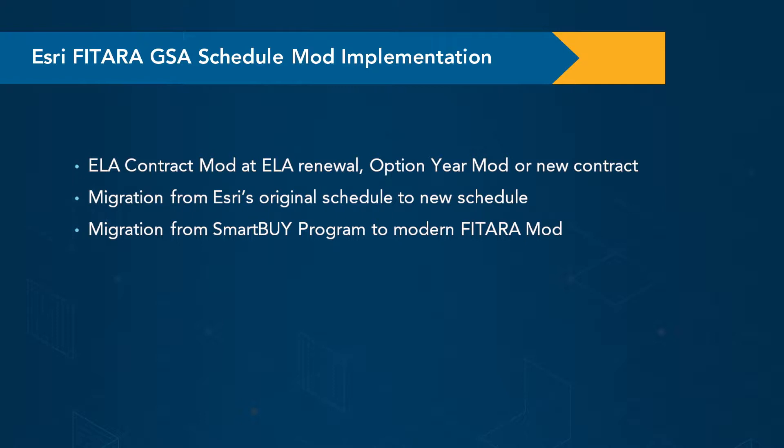That modification needs to accomplish two things. For those customers that are now participating in Smart Buy, they will need to migrate from the Smart Buy program to the Futara mod. And for those customers operating currently under Esri's original GSA schedule, which will expire in March of 2018, they will need to migrate to Esri's new GSA schedule, not due to expire until March of 2035.